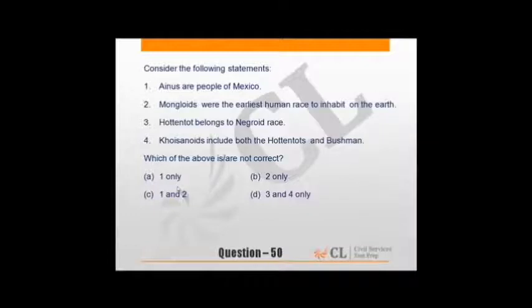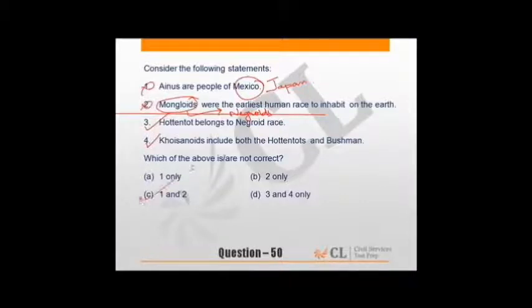Consider the following statements. Ainus are people of Mexico - if you know, Ainus were the people of Japan, are the people of Japan. Mongoloids were earliest human race to inhabit Earth - it's not Mongoloids, it's Negroids from African Valley who started and spread to other areas. Hottentots belong to Negroid race - correct. Khoisanoids belong to Hottentots and Bushmen - again correct. So first and second stand wrong.